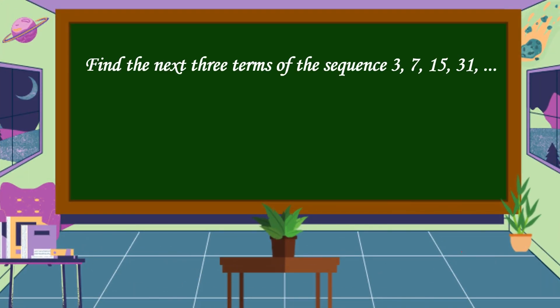Find the next three terms of the sequence 3, 7, 15, 31, and so on. What is the pattern? From 3 to 7, the pattern is 3 times 2 plus 1, which equals 7. Next, 7 times 2 plus 1 equals 15. Then 15 times 2 plus 1 equals 31.